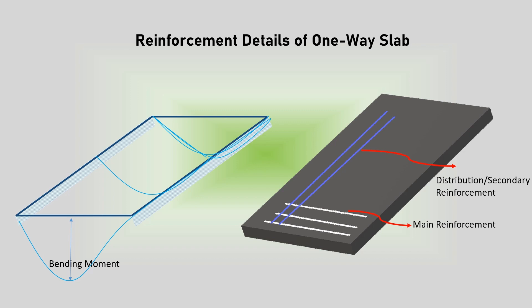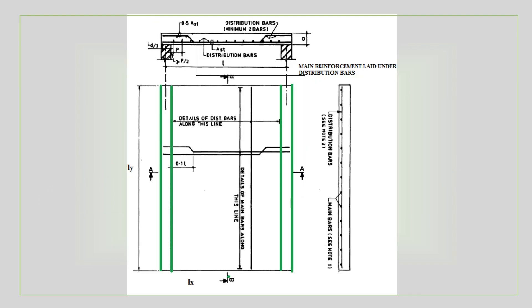While arranging the reinforcement, the main reinforcement comes below distribution reinforcement. This is to ensure that the main reinforcement occupies greater effective depth.